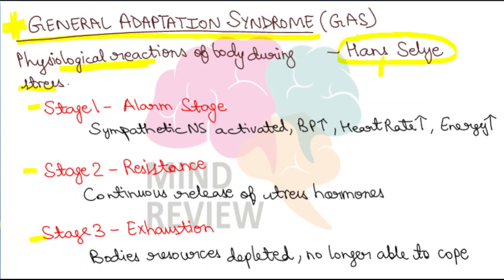Stage one is the Alarm stage. Usme kya hota hai — stressful situation ya jo aapka stressful event hai, usse aapka face to face, aamna samna hota hai. So at that point of time, your sympathetic nervous system will get activated. Do you remember chapter 2, biological perspective wala chapter — usme humne sympathetic and parasympathetic nervous system ke baare mein baat ki thi. Sympathetic nervous system kya karta hai — fight or flight response.